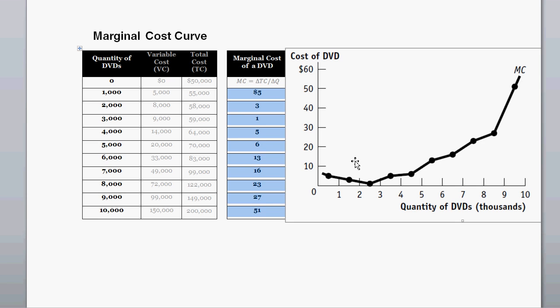So when we chart this, which is what the question asks, you'll see that the dots here of $5 is between going from 0 to 1,000 DVDs produced. The $3 marginal cost is going from 1,000 to 2,000 DVDs produced. The $1 marginal cost is going from 2,000 DVDs to 3,000. And the marginal cost of 51 is going from 9,000 to 10,000.